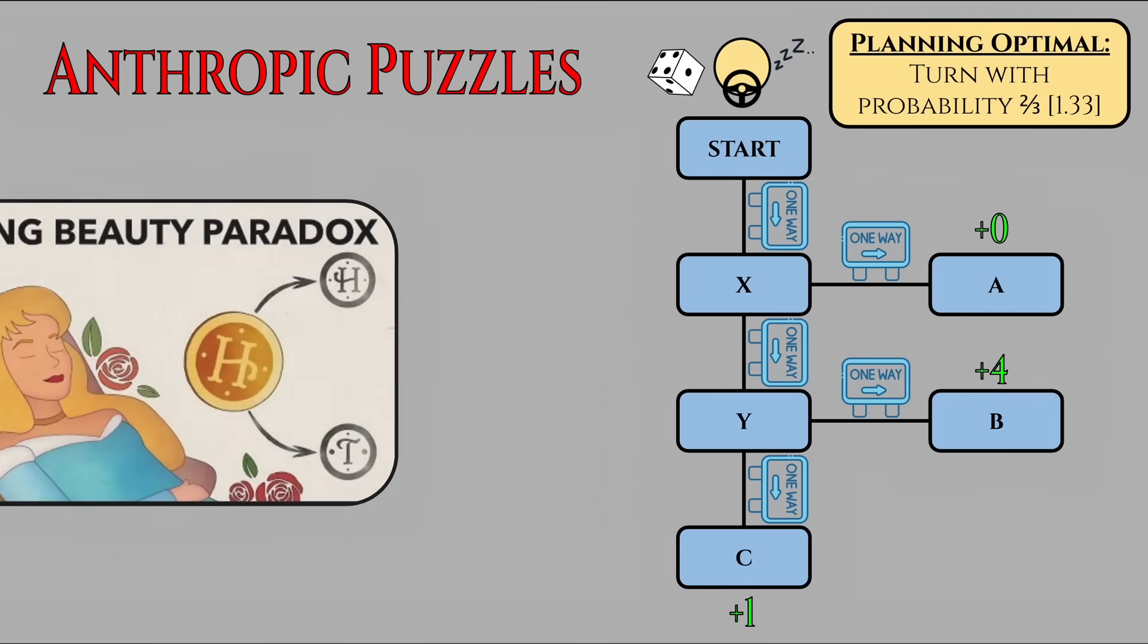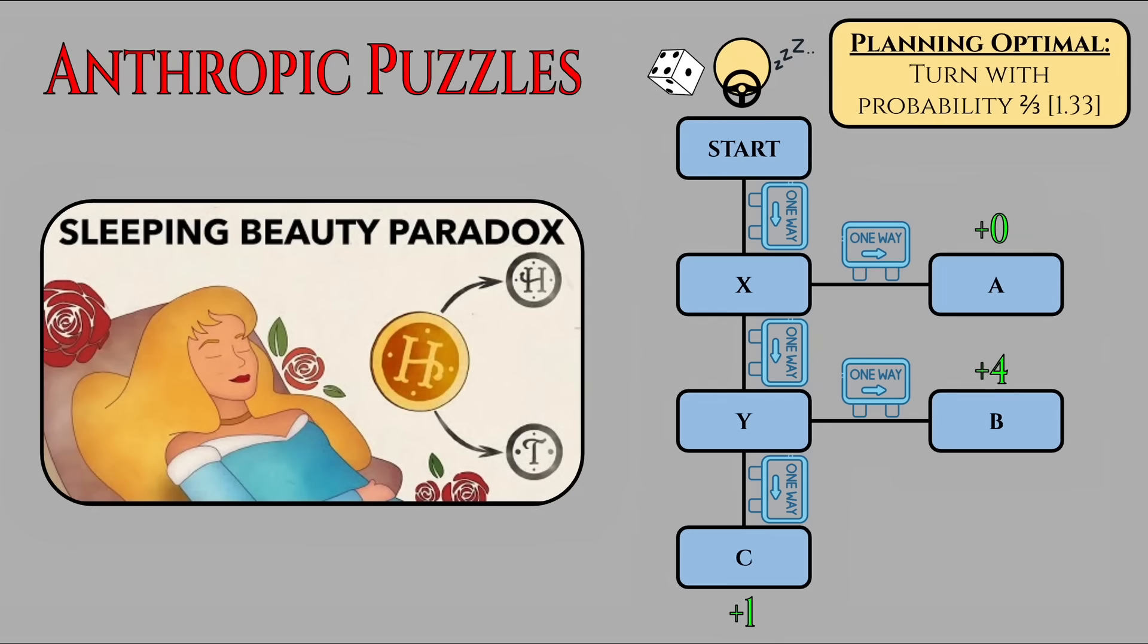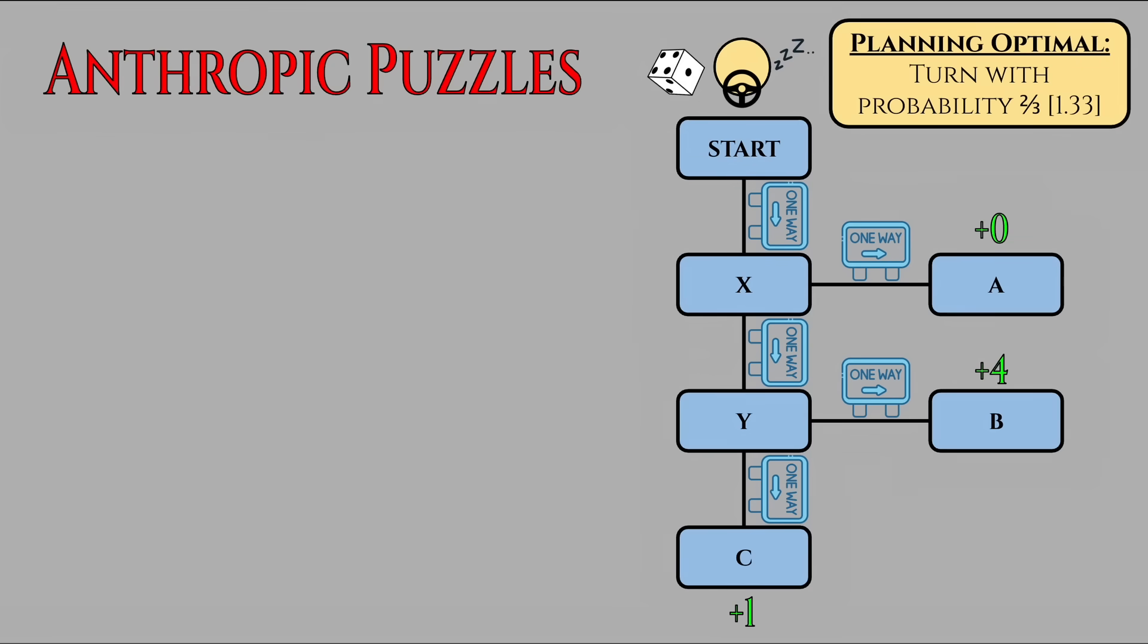Another classic anthropic puzzle is the sleeping beauty problem. I'll link a fantastic video by Veritasium in the description. But see if you can figure out in the comments if this video and approach supports the halfers or the thirders positions that he discusses. Granted, the assumptions stated in this video are pretty unrealistic in real life.